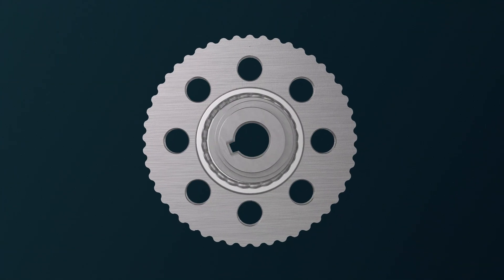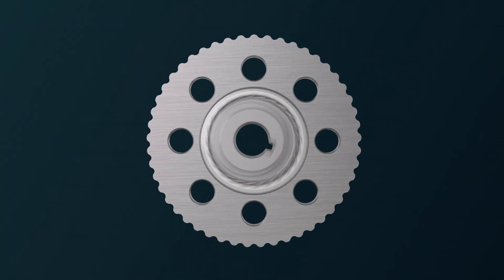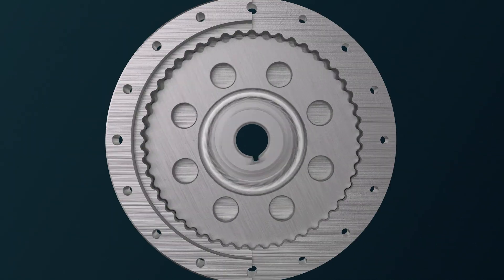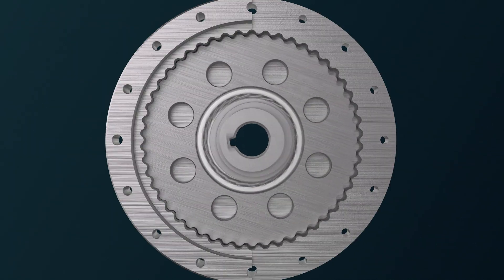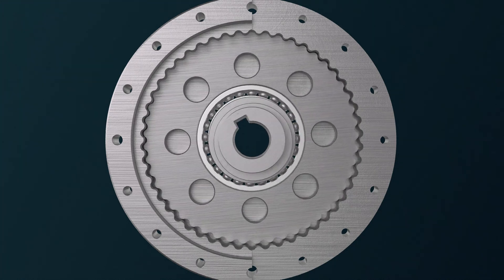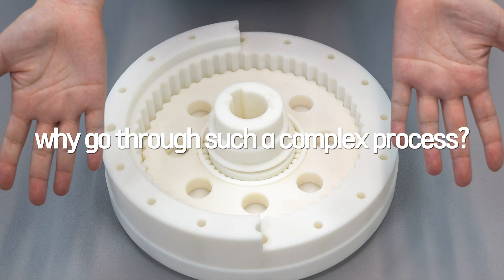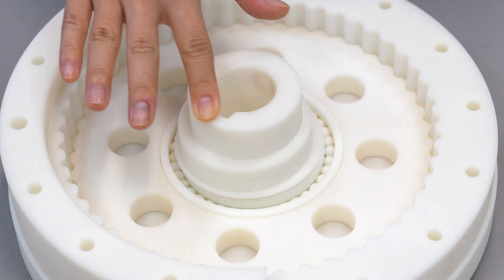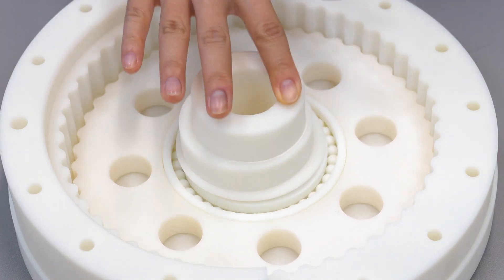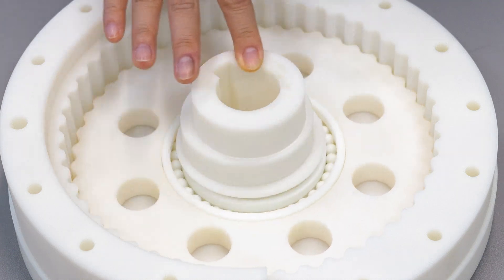It takes the input rotary energy, turns it into vibration-like motion, and then transforms it back into smooth rotational output. So why go through such a complex process? Because the reduced rotational speed gives us high torque and more precise control.